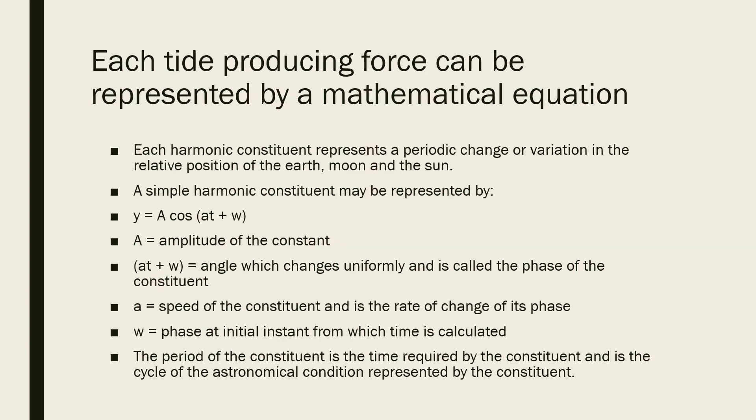Each tide producing force can be represented by a mathematical equation. Each harmonic constituent represents a periodic change or variation in the relative position of the earth, moon, and the sun.